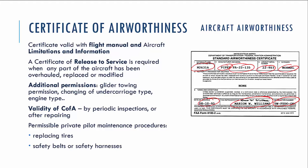This is the FAA form; for CAA it will be the same form. This certificate is valid only together with the flight manual of the aircraft and aircraft limitations and information. You also have to get a certificate of release to service when the aircraft or parts of the aircraft have been overhauled, or some parts are changed or modified. Also, if you have done changes to get additional permissions — for example, to tow gliders, or if you change the type of undercarriage, say from a tail dragger to a nose gear type, or if you change the engine type — you have to get a certificate of release to service again.